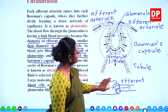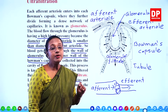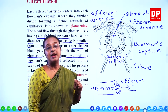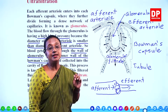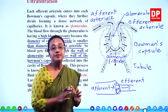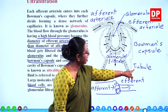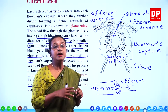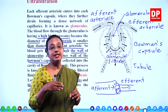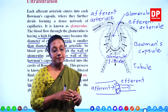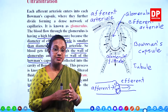The glomerular filtrate is similar to blood plasma, except it does not have blood cells or plasma proteins. The rest of the substances are similar to plasma. Once the glomerular filtrate enters the tubule, it passes through the proximal convoluted tubule, then through the descending and ascending limbs through the loop of Henle, where the second process — selective reabsorption — takes place.